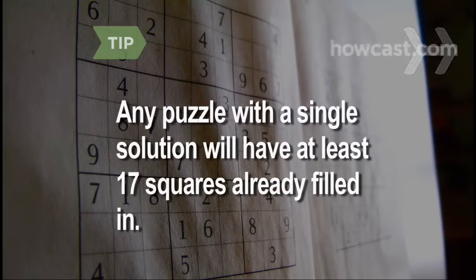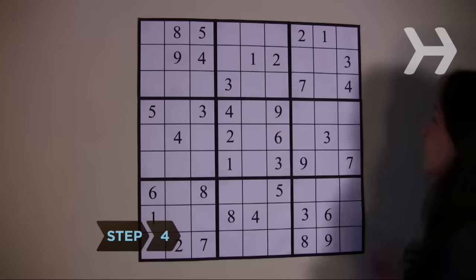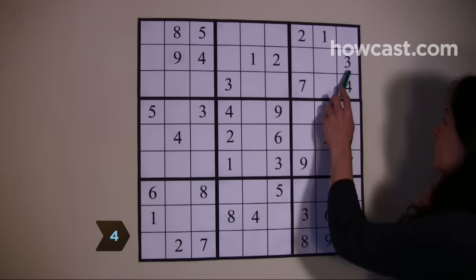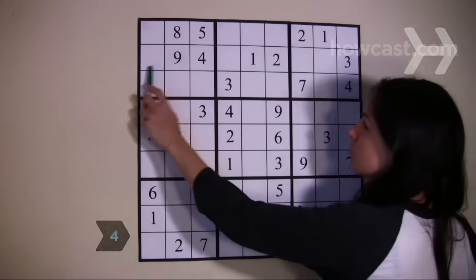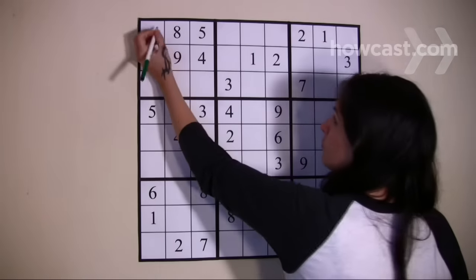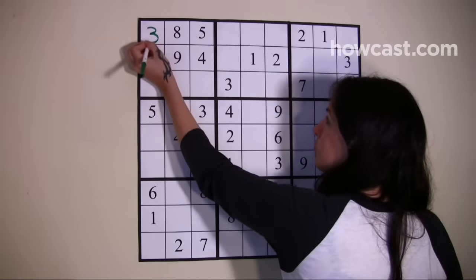Any puzzle that has one single solution will have at least 17 squares already filled in. Step 4: Use crosshatching, the process of figuring out where a number fits by eliminating possibilities based on numbers in other squares in the same row, column, and box.